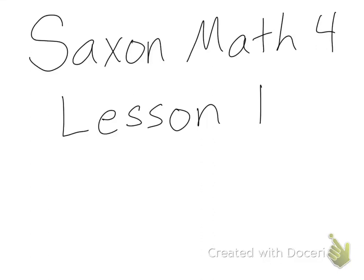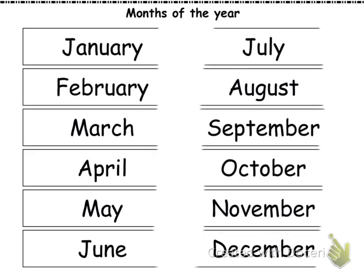Hello everyone. Today's lesson is lesson one: writing the date in three ways and writing a part of a set as a fraction. When we write the date, we can use months or we can use numbers to write the months. Each month has a special number that goes along with it. Let's start off by reading the months of the year in order.